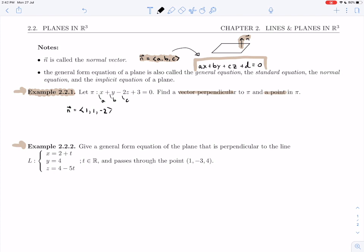Finding a point in the plane takes a little bit more work. Any x, y, and z that satisfies this equation will be a point in the plane. So we could just do a guess and check, but better than that, more efficient than that, is to choose values for two variables and to solve for the third.